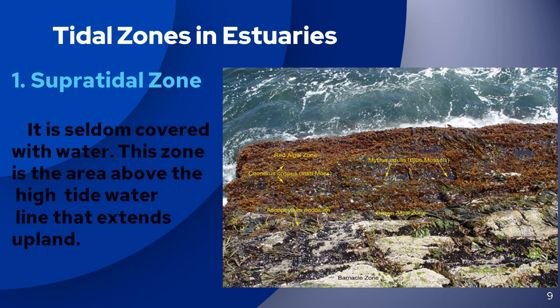According to ecologists, estuaries are usually divided into three tidal zones: the supratidal, intertidal, and subtidal zones. They are subject to changing water levels, temperature, oxygen content, and levels of light.